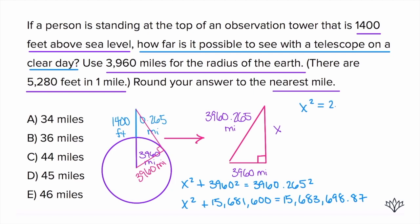We're going to subtract 15,681,600 from both sides. What we're left with is, on the left, we have X squared. On the right, we have 2098.87. Now what do we do? Square root both sides. We have X is 45.8. What unit is this in? Remember, what we did at the very beginning is we took our feet for the observation tower and turned it into miles. Everything from that point has been in miles, so our answer here is in miles. The question is telling us to round to the nearest mile. If we look at the answer choices, 45.8, the closest mile would be 46. We got to round up because it's bigger than 0.5. That's answer choice E.